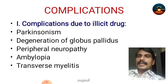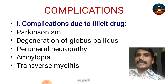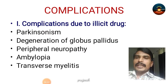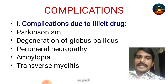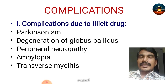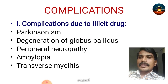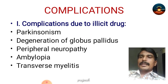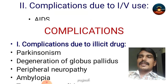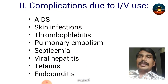Now the complications. Complications due to illicit drug — most of the time these drugs are adulterated, and the adulteration components are very harmful to the body. These include Parkinsonism, degeneration of globus pallidus, peripheral neuropathy, amblyopia, and transverse myelitis.